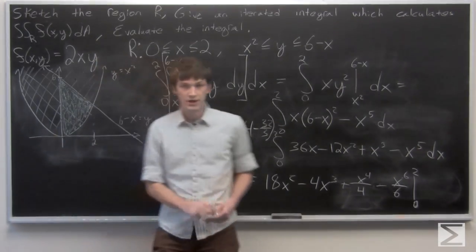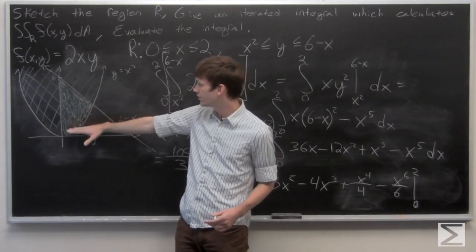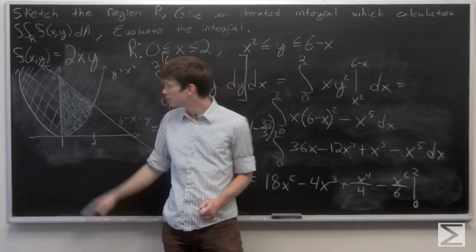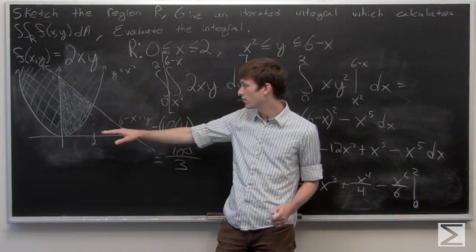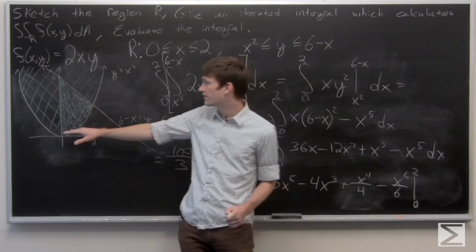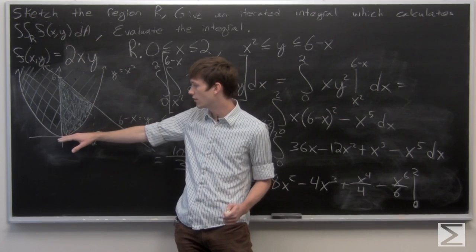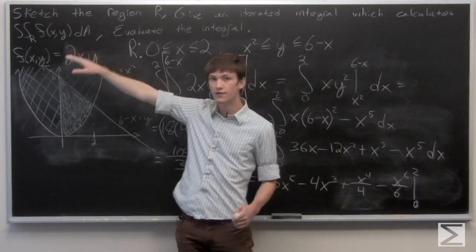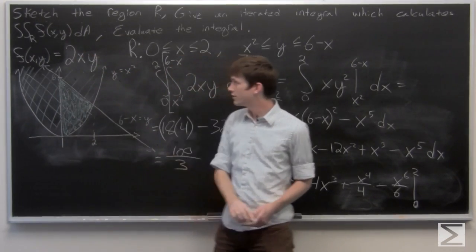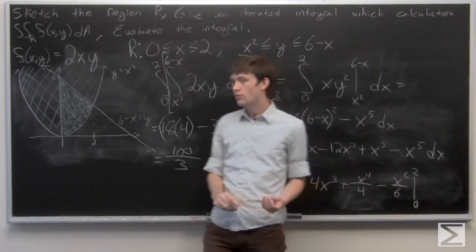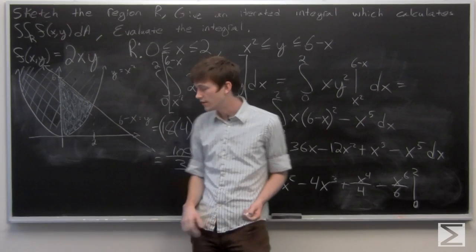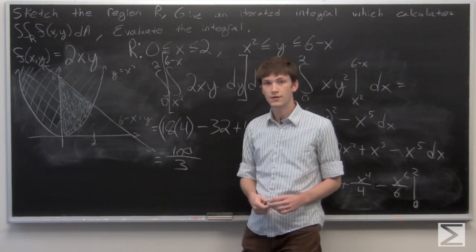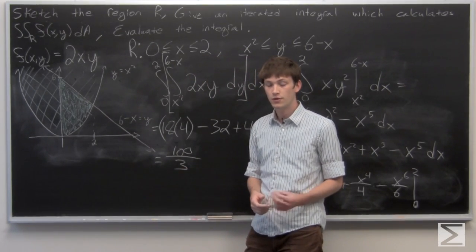So to summarize: we sketched our region R, created an iterated integral to integrate f(x,y) over that region, and evaluated it. We determined that the double integral of 2xy over the region R is 100/3.